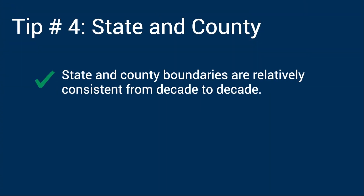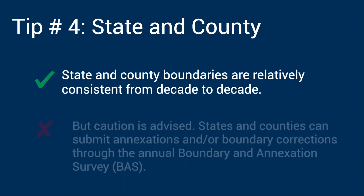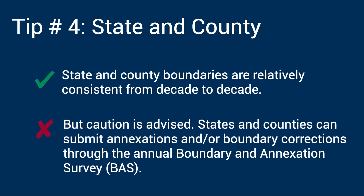Tip number 4: another option that is relatively consistent from decade to decade is counties. Even when working with higher levels of geography such as counties and states, you need to make sure that their boundaries remain the same. Although it is more common to see an annexation process take place at a city or town, it is possible but less common that annexation happens in a county or state. States and counties can submit annexations and/or boundary corrections through the annual boundary annexation survey, but the frequency and number of updates to county boundaries from decade to decade is small compared to updates submitted for other legal geographies, such as incorporated places.